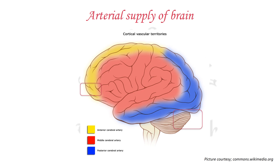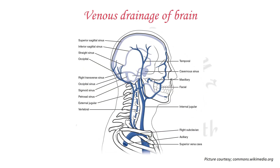To simplify further, there are three main large arteries supplying the brain: the anterior cerebral artery shown in yellow, the middle cerebral artery shown in red, and the posterior cerebral artery shown in blue. The brain also has two venous drainage systems — superficial and deep. The main superficial drainage is the superior sagittal sinus, and the deep venous system drains via the transverse sinus, which continues as the sigmoid sinus and then as the internal jugular vein.